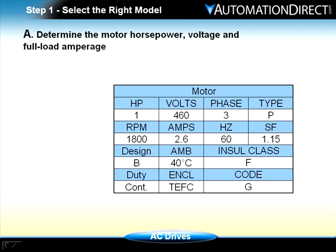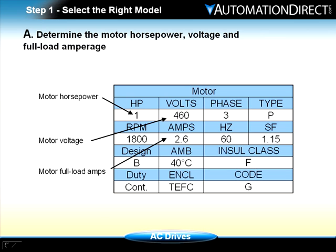In order to select the right model of AC drive for your application, you must determine the motor horsepower, voltage, and full load amperage. This information can be found on the motor nameplate. For this scenario, we are using a one horsepower, 460 volt AC motor with a full load rating of 2.6 amps, controlling a blower fan.